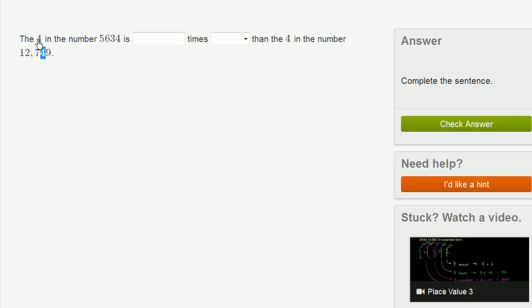So this 4 represents 10 times smaller value than this 4. This only represents, or this 4 I should say, this 4 right over here represents 4, while this represents 40. So it is 10 times smaller than the 4 in 12,749. 4 by itself is 10 times smaller than 40.